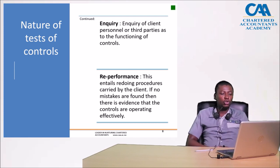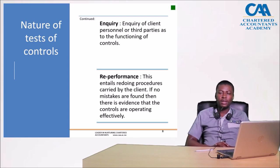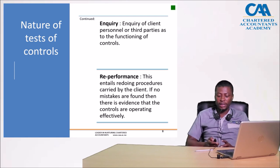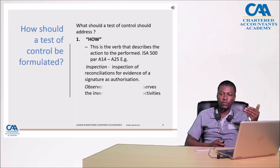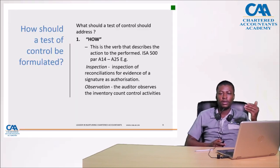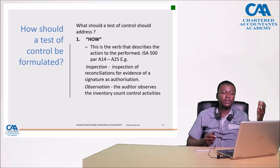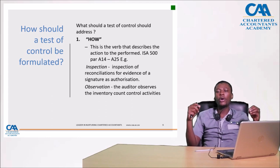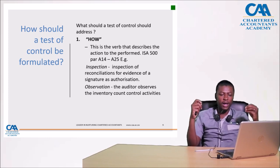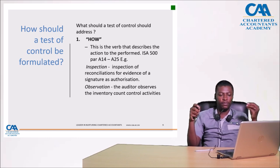How should the test of control be formulated? The most important thing is why we are doing the TOC — we want to test the operating effectiveness of the control. With that in mind, the test of control should address three elements. First, the 'how': you are describing the action to be performed. Am I going to inspect? Am I going to observe? Am I going to inquire? Or am I going to re-perform? How exactly am I going to gather the audit evidence?